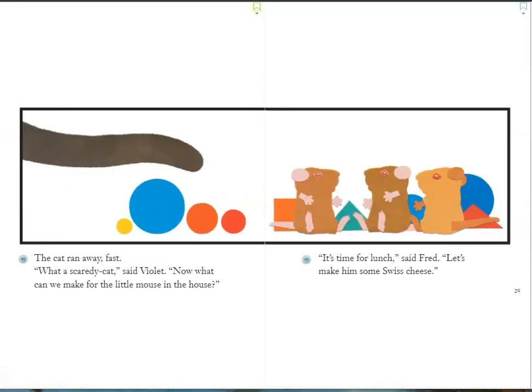The cat ran away fast. "What a scaredy cat," said Violet. "Now, what can we make for the little mouse in the house?" "It's time for lunch," said Fred. "Let's make him some Swiss cheese."